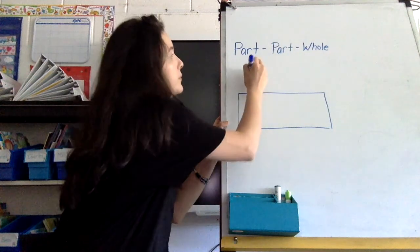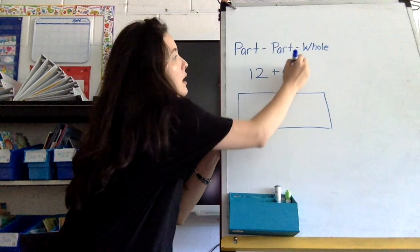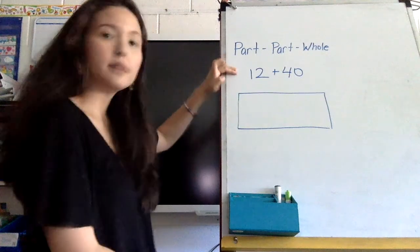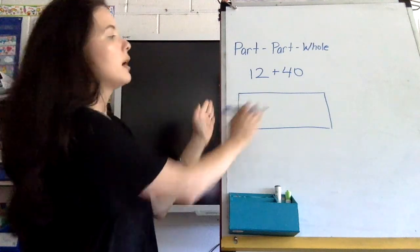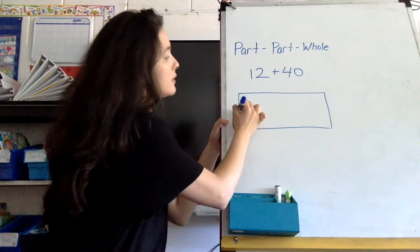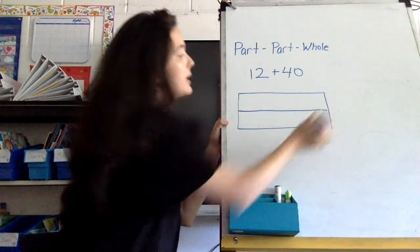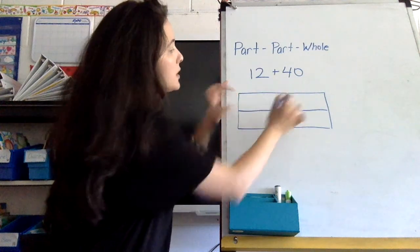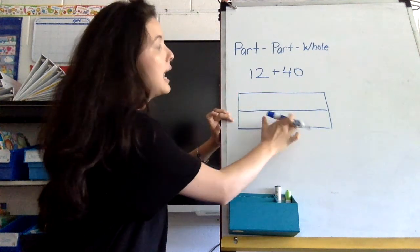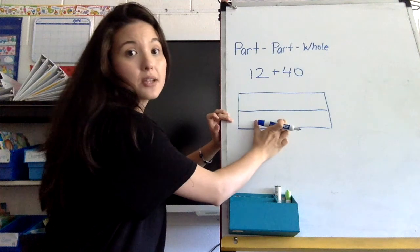So I'm going to draw my rectangle again, and let's say the problem I have is 12 plus 40. I need to think about 12 plus 40. The way I'm going to draw that on my part-part-whole diagram, I'm going to draw my line down the middle.